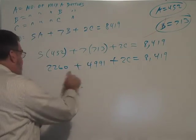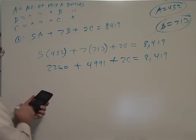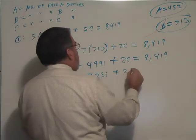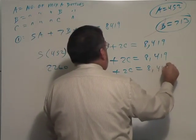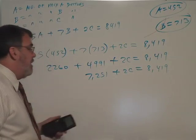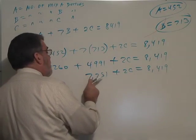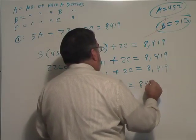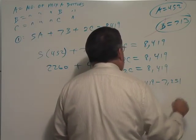If I add these two numbers together, I get 7,251 plus 2C equals 8,419. Now subtract this number from both sides. 2C would be 8,419 minus 7,251.